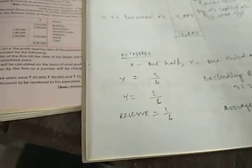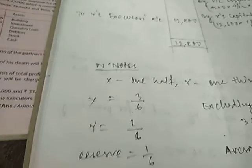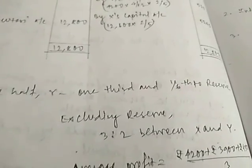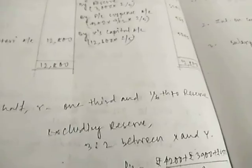Now you can just simply forget reserve. If you exclude reserve, the ratio between X and Y is 3 is to 2. So we will continue the sum with 3 is to 2, that is 3 by 5 for X and 2 by 5 for Y.